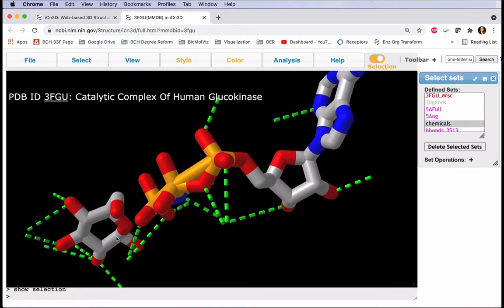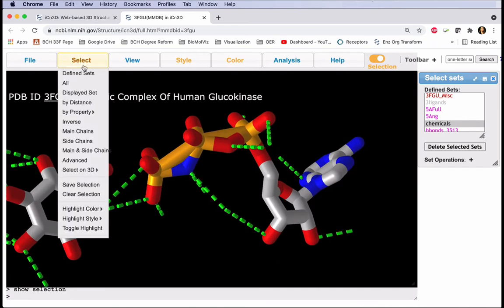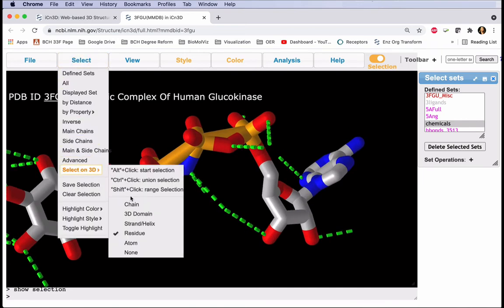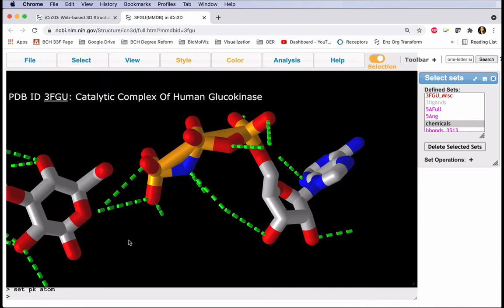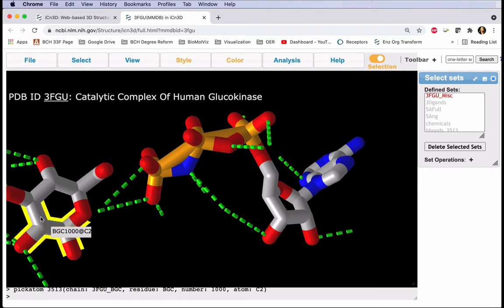Now we can select each carbon atom in this structure. Select, Select on 3D, and this time select Atom. Using our same method, Option click on the first Atom now, and then Control and Click to Add. Click on each atom.